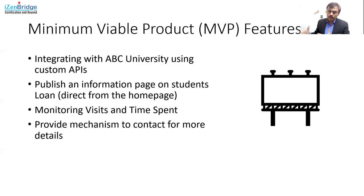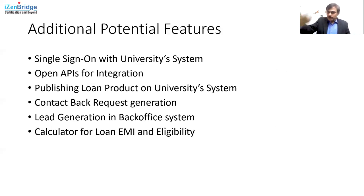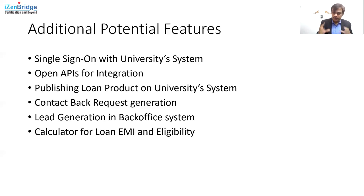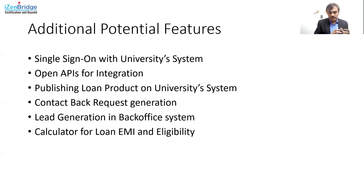If we get positive results from the MVP, we will move forward. Once the MVP passes through, more features will come in. We need to focus on single sign-on integration with the university system so we know who the student is and can understand more details. We need proper APIs for integration. We need to publish loan products on the university system for product management related to loans. We should have a proper contact-back request generation that goes directly into our back-office system. And we should provide various educational tools like a loan calculator and EMI calculator to help people make informed decisions. These are the additional potential features which will come once we are done with the MVP.